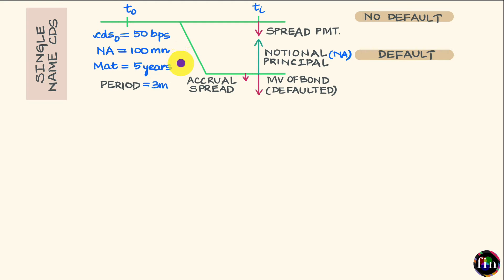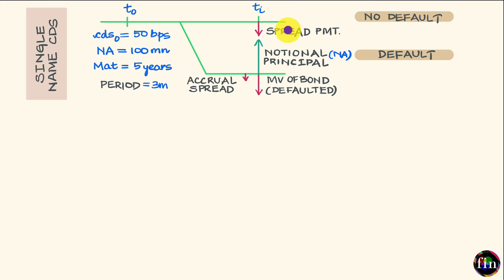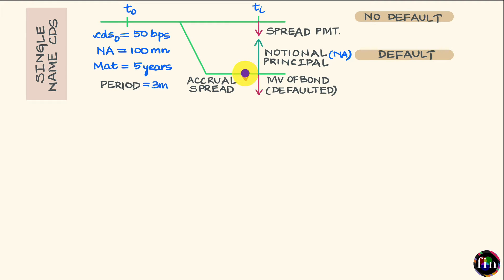Let me lay out the cash flows in this CDS from the perspective of you, the protection buyer. For any given period in which the default of ABC company does not happen, at the end of that period you will pay the protection seller the spread payment of $125,000, and the CDS moves on to the next period. If during any given period ABC company does default, you will be required to pay a prorated amount called the accrual spread, calculated based on the time between the beginning of the period and the time of default.